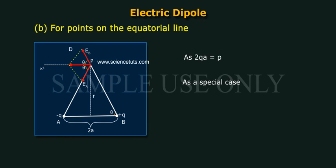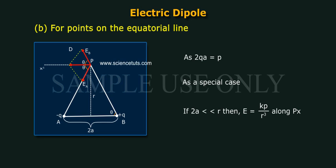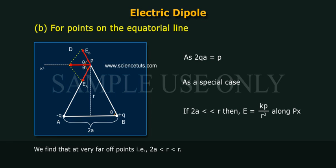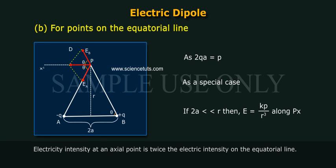As a special case, if 2a is much less than R, then E equals 2 E_A cos theta. We find that at very far off points, that is when 2a is much less than r, the electric intensity at an axial point is twice the electric intensity on the equatorial line.